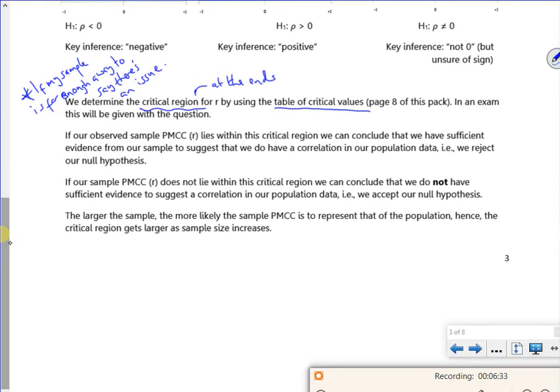So here's the important bit. So if the sample doesn't lie in this critical region, we're okay. It's fine. It's not far enough away. But if it does, then we've got an issue. There might be something wrong with it.